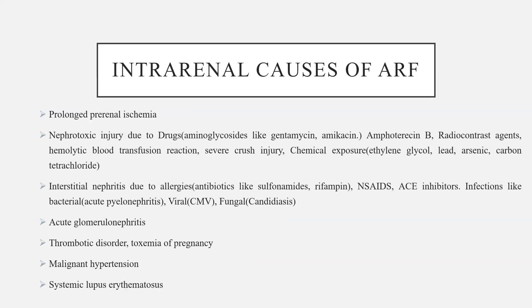Intrarenal causes of acute renal failure include prolonged pre-renal ischemia, nephrotoxic injury due to drugs such as aminoglycosides like gentamicin and amikacin, amphotericin B, and radio contrast agents. Other causes are hemolysis, hemolytic blood transfusion reaction, severe crush injury, and chemical exposure due to ethylene glycol, lead, arsenic, and carbon tetrachloride.